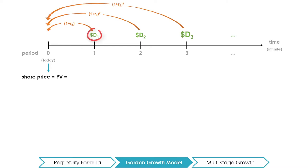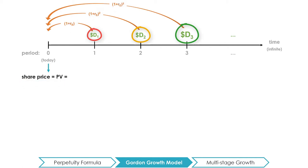If the value of the dividends keeps growing, how can we calculate the price of the stock without having to individually discount each dividend back to today? The Gordon Growth Model allows us to do just that for firms that raise the size of each dividend at a constant rate, and there are two versions of the Gordon Growth Model.